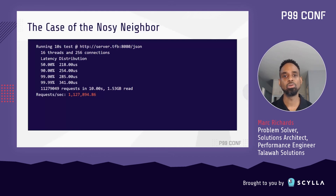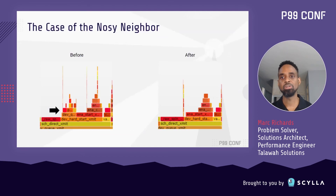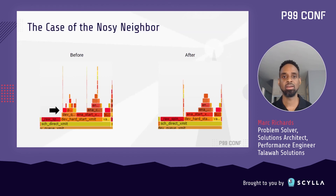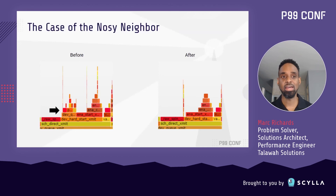Looking at our flame graphs, we see the offending functions have been fully removed — our nosy neighbor has been successfully evicted. You can also see our next target, the raw spin lock, lurking there on the left side of the flame graph.